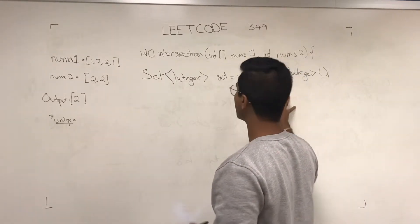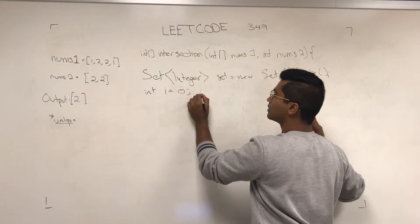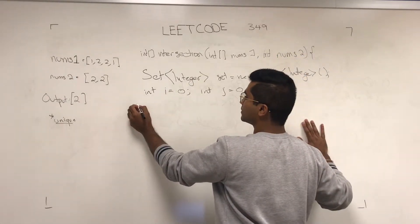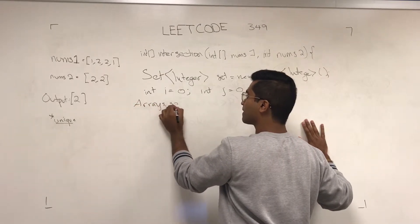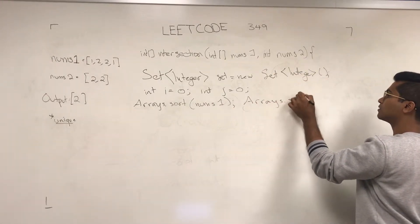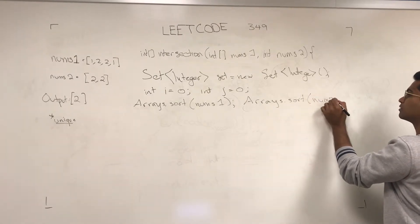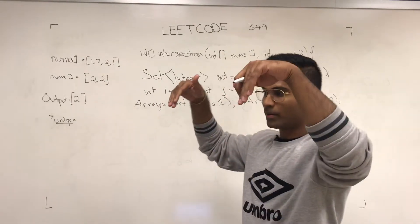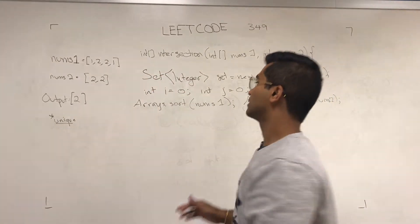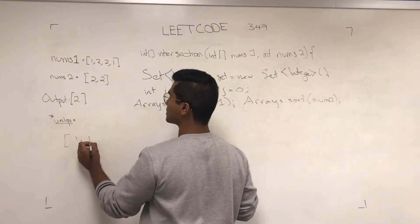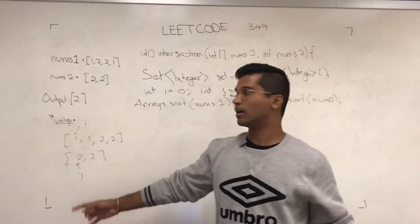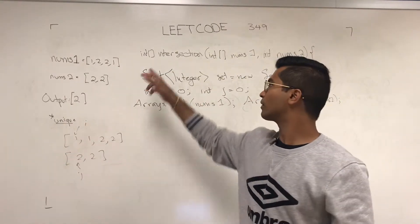Now that we wrote the set, let's initialize the pointers. The key to this problem is to sort the arrays. We're going to make the pointers keep traveling along. So when we sort these, it's going to look like this. We'll keep i there and we'll keep j there. Now, if they're both the same, then we can add it to our list that we're going to return as an integer array.